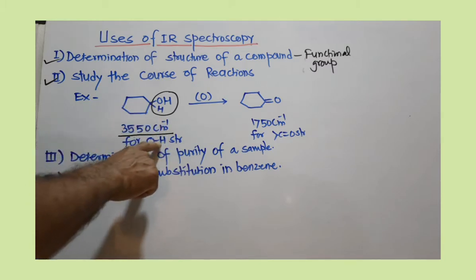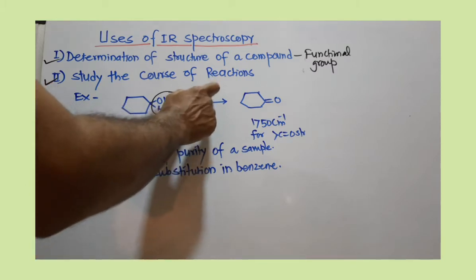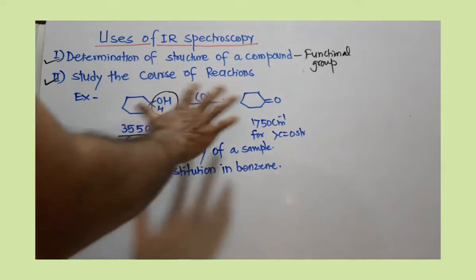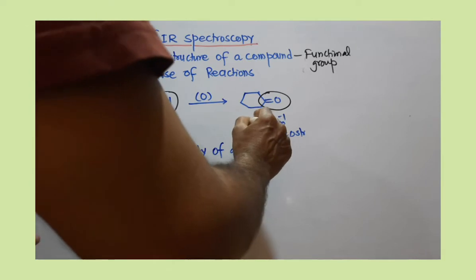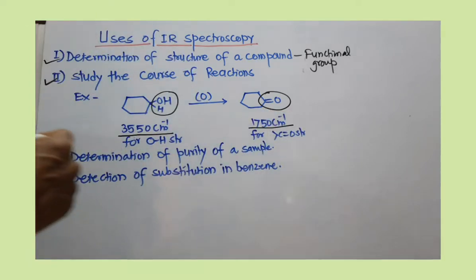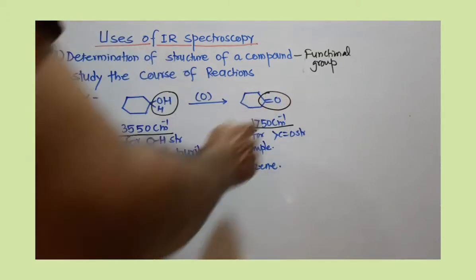This is for O-H stretching. Once you do the oxidation reaction, this is converted to the carbonyl group in cyclohexanone. For the carbonyl group, you will get a band around 1700 cm⁻¹.